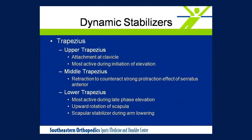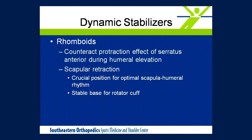The trapezius is divided into three different components. The upper trapezius, with its attachment at the clavicle, is most active during initial elevation. The middle trapezius is an important retractor of the scapula and counteracts the strong protraction force of the serratus anterior. The lower trapezius is most active during late-phase elevation, assists with upward rotation, and plays a role in stabilizing the scapula during lowering of the arm. The rhomboids provide a retraction force to counteract the serratus anterior, and this position of scapular retraction is vital — for the rotator cuff to function optimally and be at its strongest, the scapula needs to be retracted.